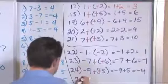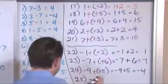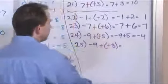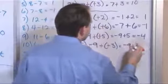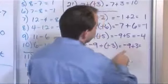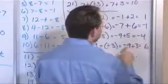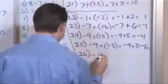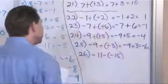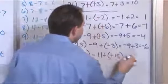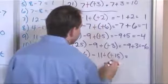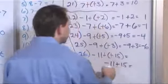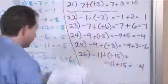Problem 25: negative 9 minus negative 3. We're going to add the opposite — negative 9 plus 3. Then we subtract: 9 minus 3 gives us 6, and the sign comes from the larger absolute value. Problem 26, the last problem of this type: negative 11 minus negative 15. Add the opposite to get negative 11 plus 15. Because one of them is negative, we subtract — 15 minus 11 is 4, and the sign comes from the larger absolute value, so it stays at positive 4.